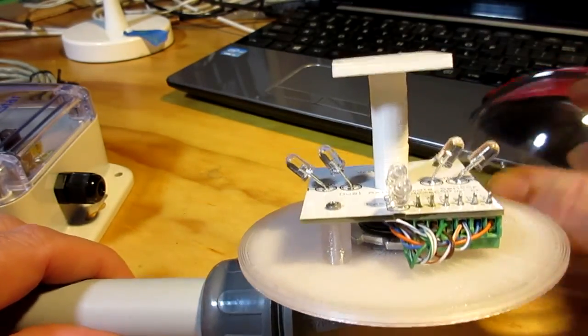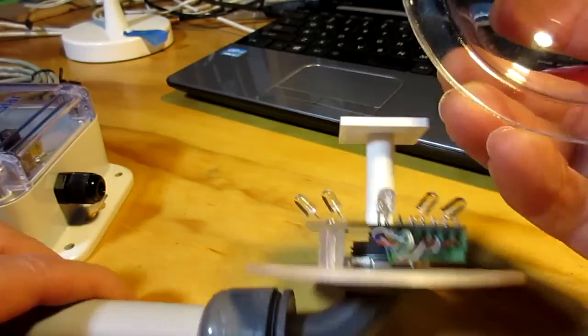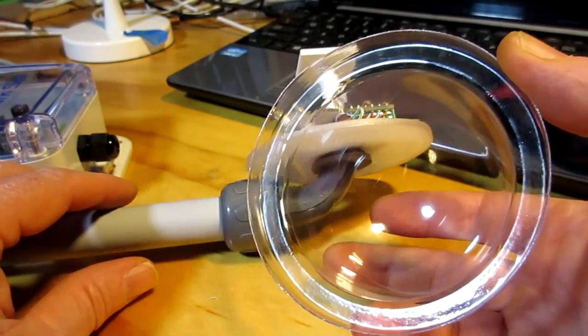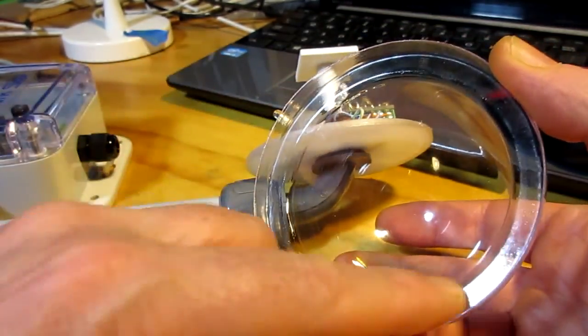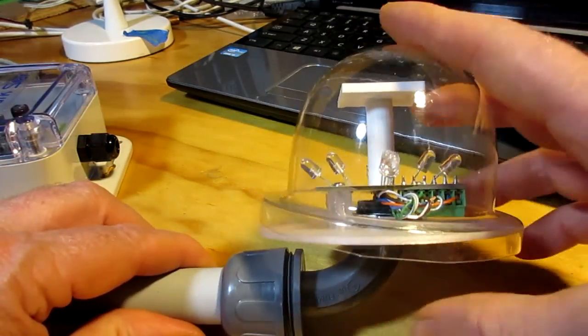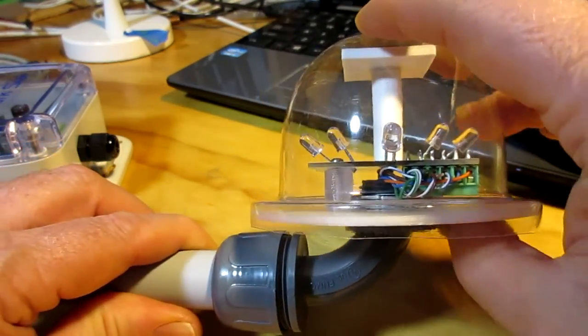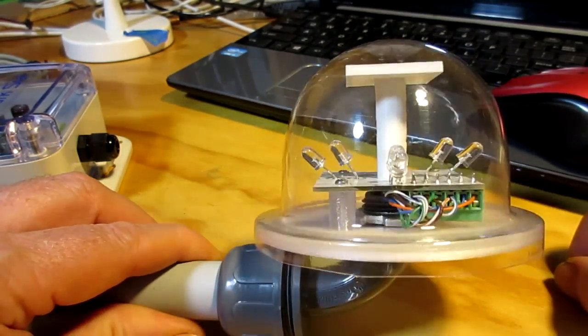That's the remote sensor. We simply apply a bead of silicone around the edge, and then seat it on there for final installation.